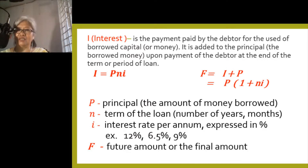What is the mathematical formula for interest? It is equal to P times N times I. P is the principal — the amount of money borrowed. N is the term of loan, which could be the number of years or number of months. I is the interest rate per annum expressed in percent, for example 12%, 6.5%, 9%. And F is the future amount or final amount, which mathematically is equal to the interest plus the principal.